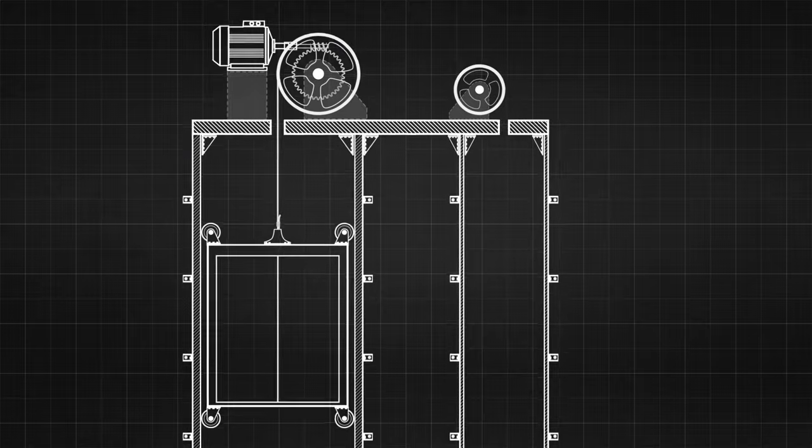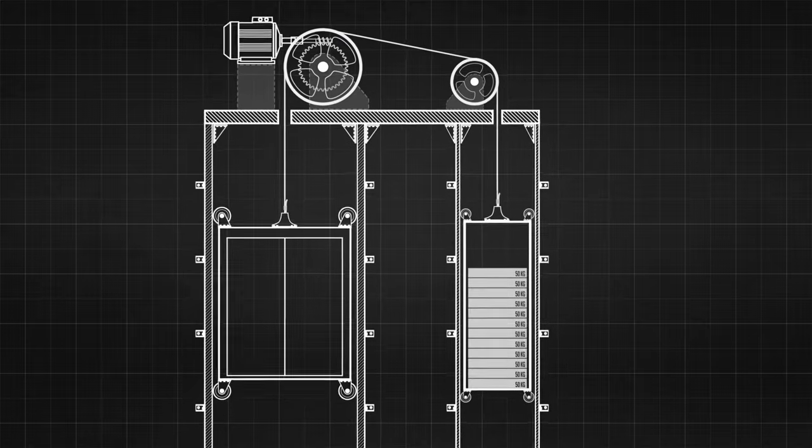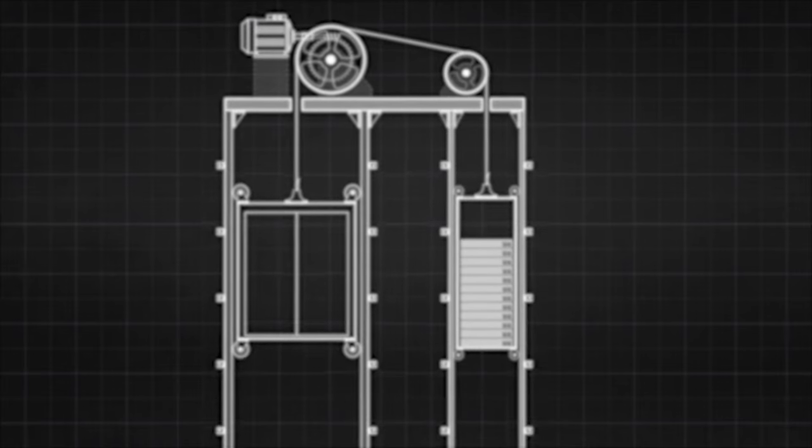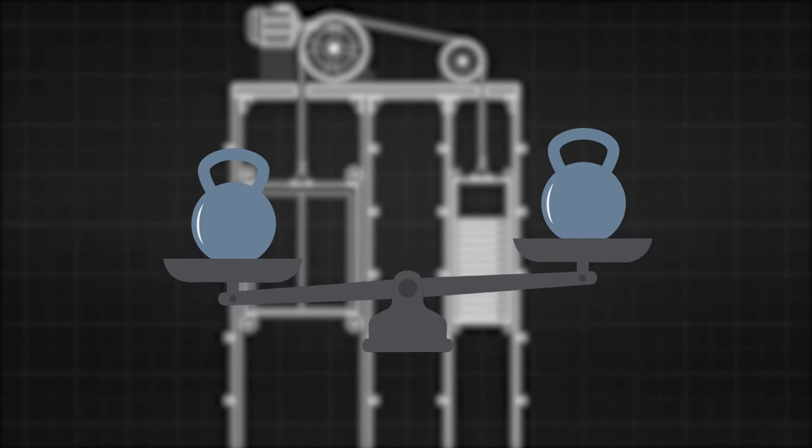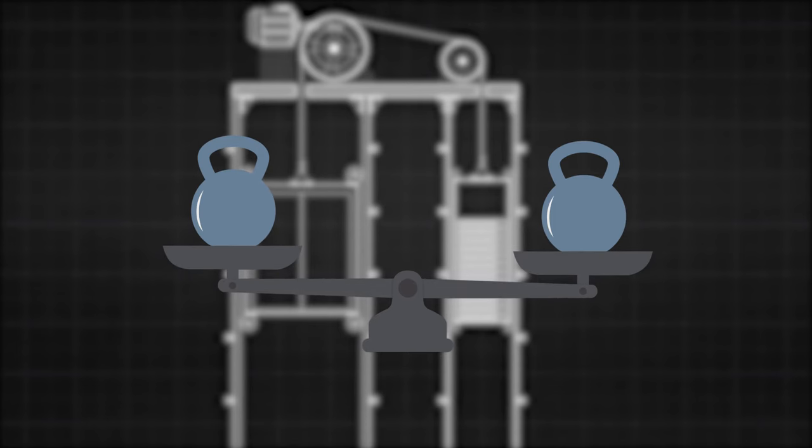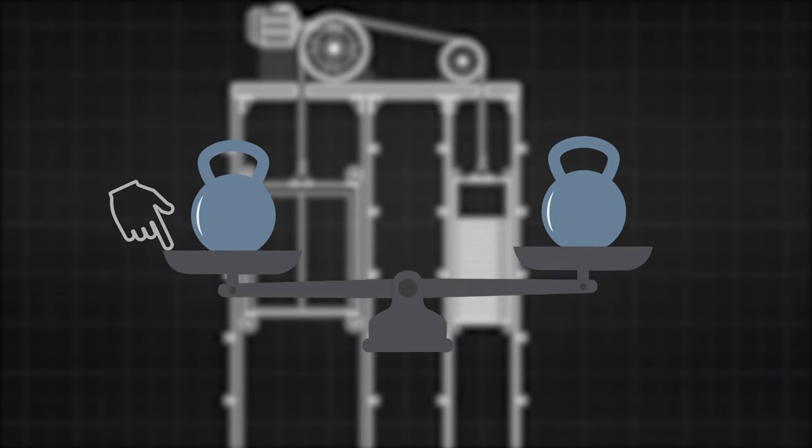This is why the counterweight is introduced. The basic idea of counterweight is that if there are two equal weights attached to either end of a cable, then the system is perfectly balanced. The only job of the motor is to tip the balance one way or the other.